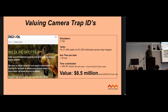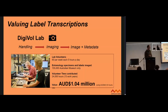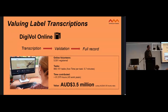For labelled transcriptions, we again use the equivalent hourly rate of a technical officer here in Australia to do image capture, transcribing and classifying. In the Digivol lab, volunteers come to the Australian Museum and take images of specimens — 60 volunteers a week, 155,000 specimens, around 24,000 hours, which is 13 person-work-years — around $1 million through volunteer contributions. Online transcription and validation, yielding a full record, adds up to $3.5 million.